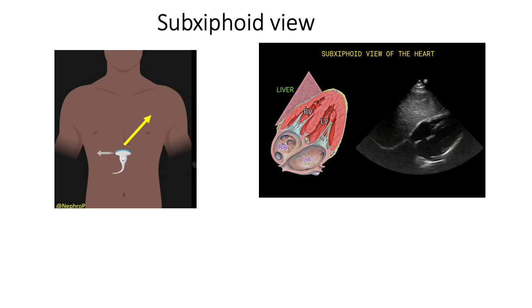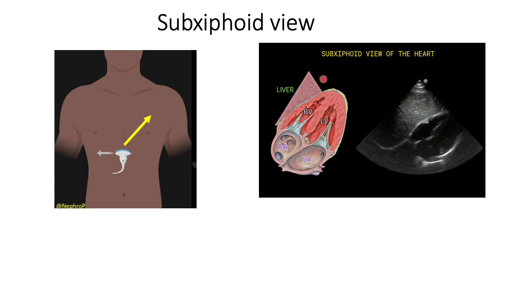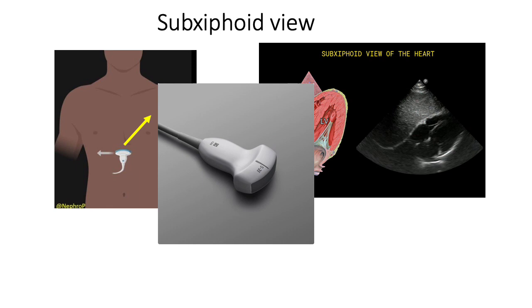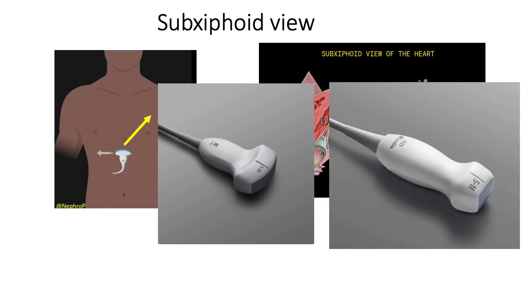The third view is the subxiphoid view, where the probe is placed in the epigastric area with sound waves directed towards the heart. The liver is used as a window to visualize the inverted heart. Free fluid, if present, will be collected within the pericardium. You can use either the curvilinear probe or a phased array probe, but be mindful of probe orientation and image acquisition.